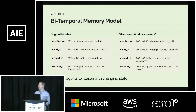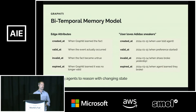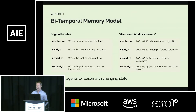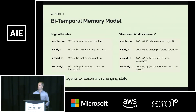This is the secret sauce. Graphiti extracts and tracks multiple temporal dimensions for each fact — it identifies when a fact is valid and when it becomes invalid. On the right-hand side you can see, using the example I illustrated a few slides back, how Graphiti would parse those different time frames. This enables temporal reasoning: what did the user prefer in February? It enables your agent to answer questions that RAG simply cannot handle.